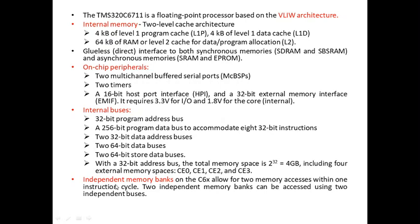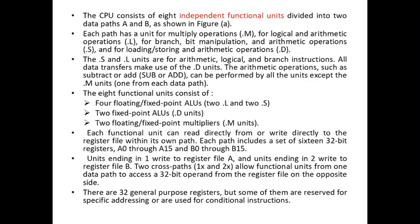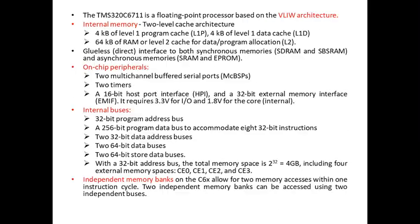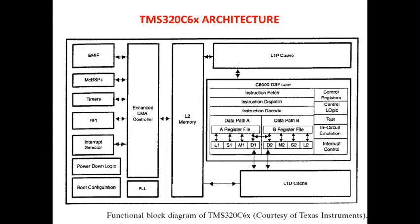The independent memory banks on the C66 allow for two memory accesses within one instruction cycle. Two memory banks can be accessed using two independent buses. The CPU consists of eight independent functional units divided into two data paths: A and B.